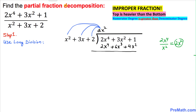Now we change the signs. The positive 2x⁴ becomes negative, the positive 6x³ becomes negative, and the positive 4x² becomes negative as well. So 2x⁴ and −2x⁴ cancel out, leaving us with −6x³. And 3x² and −4x² give us −x².